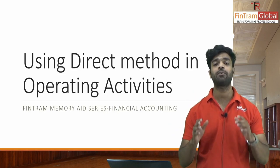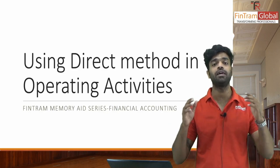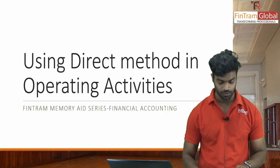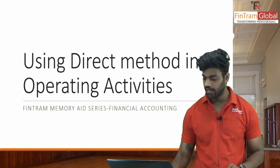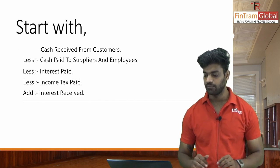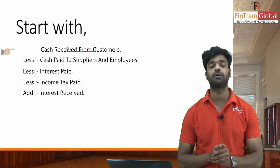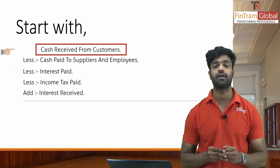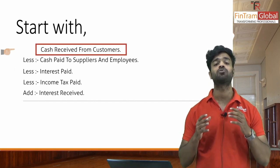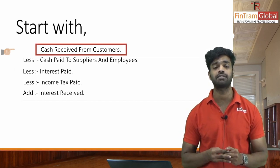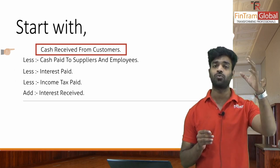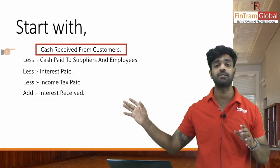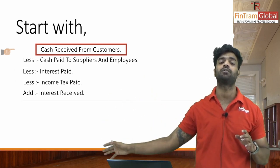So let's look at the direct method. Where does the direct method start? The first line is cash received from customers, which is the key item in the direct method for operating activities.